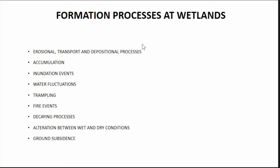These are some of the formation processes present in wetlands of geogenic nature. The majority of those are usually summarized under erosional transport and depositional processes, which could also include accumulation, inundation events, water fluctuations, trampling, fire events and so on.